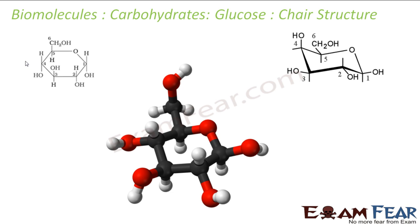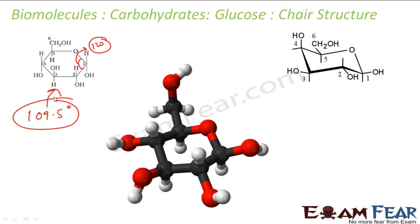Let's talk about the chair structure. The Haworth structure had a limitation: all bond angles in it are 120 degrees. However, all the carbons in glucose are sp3-hybridized, so the expected angle is 109.5 degrees. If the actual angle is 120 degrees instead of 109.5, there is torsional strain on the molecule, which makes it unstable.